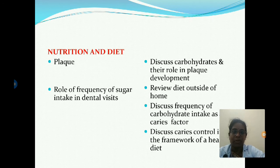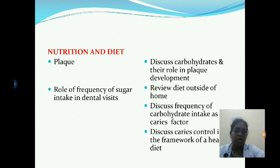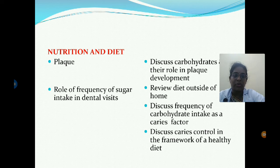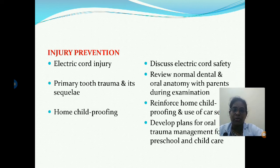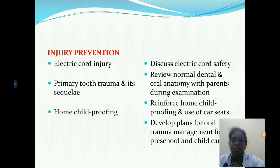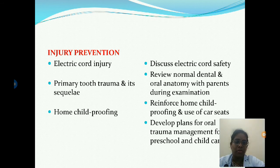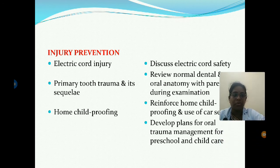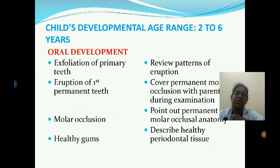For oral habits at twelve to twenty-four months, thumb sucking and pacifier use are reviewed, covering non-nutritive sucking habits and safe pacifier use. For nutrition and diet, the role of frequency of sugar intake in dental caries is examined — discussing pathways of caries and plaque development, review of diet outside the home, frequency of carbohydrate intake as a caries factor, and caries control within a healthy diet framework. For injury prevention, topics include electric cord injury, primary tooth trauma and sequelae, and home childproofing strategies.